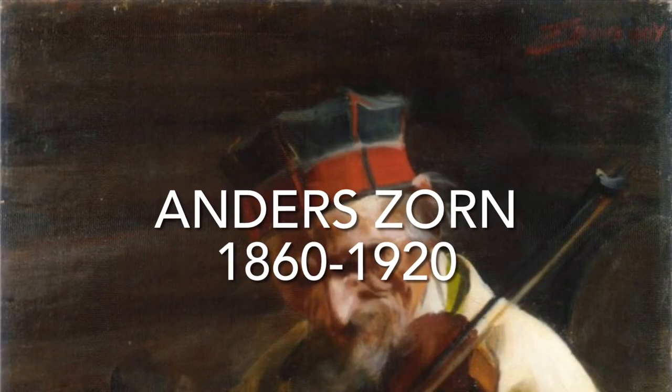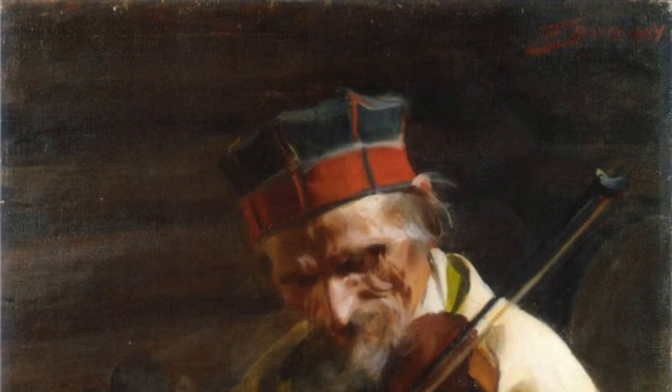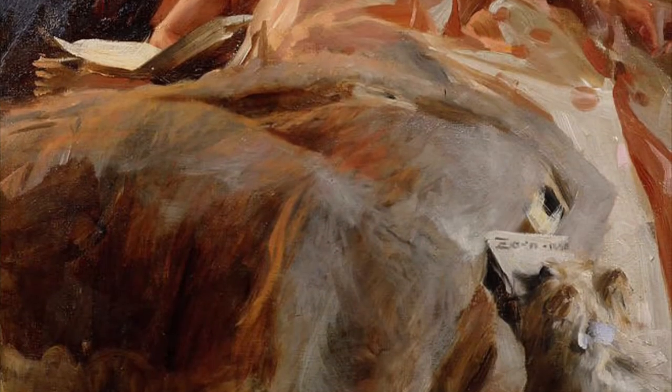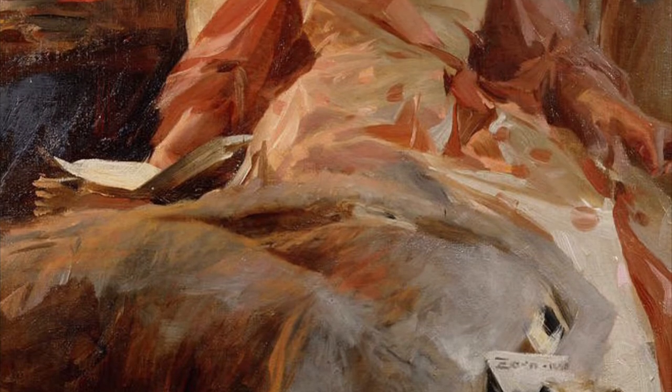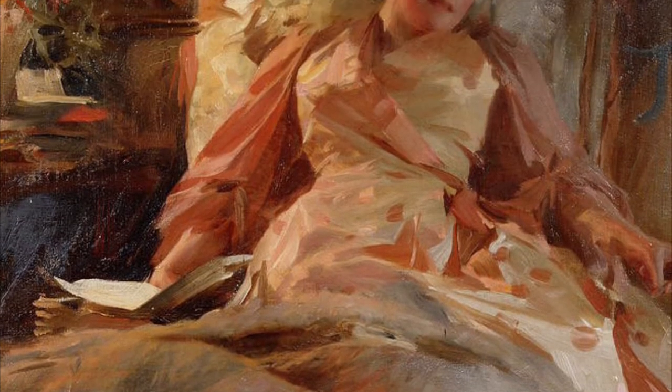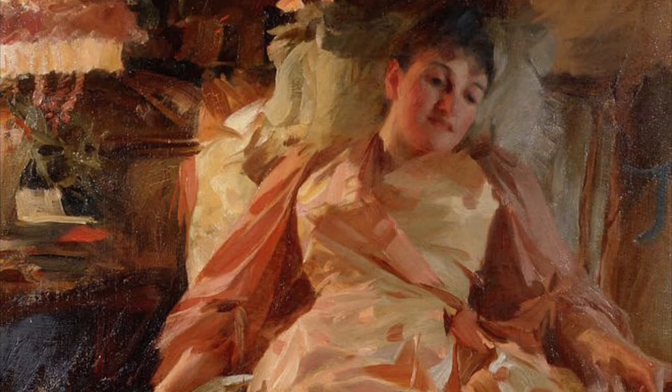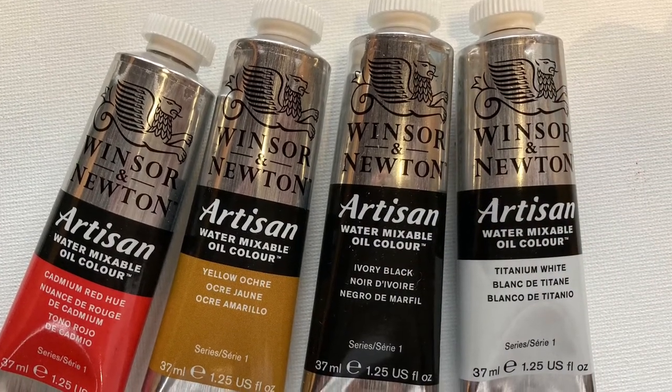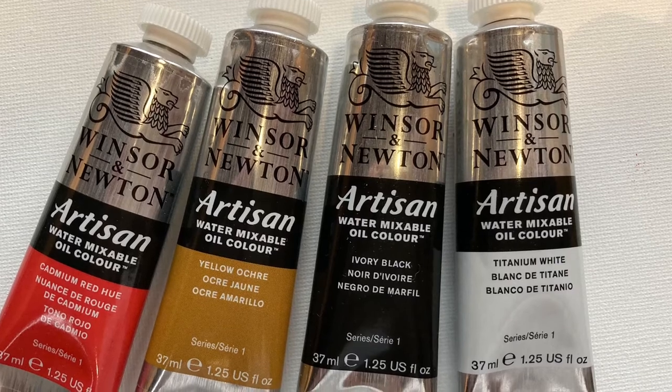Anders Zorn was a Swedish artist who lived from 1860 to 1920. He was predominantly a portrait painter, but he only used four colors in his palette: cadmium red, yellow ochre, ivory black, and titanium white.